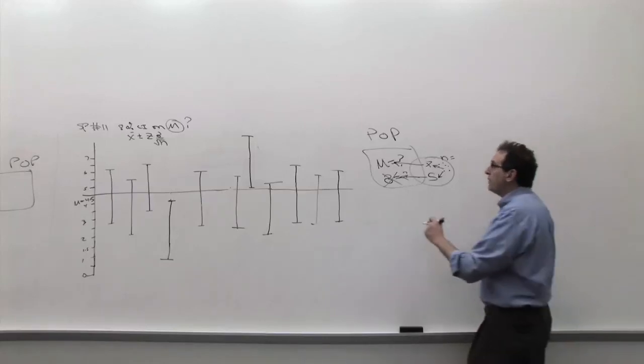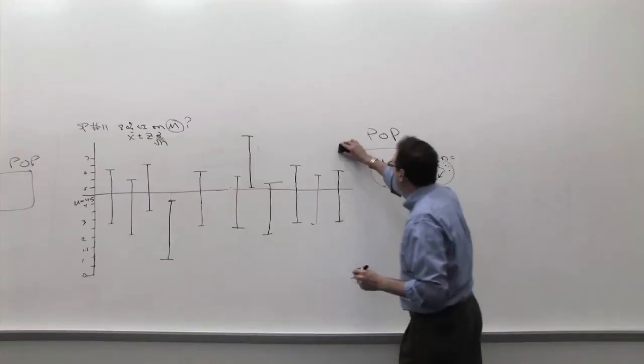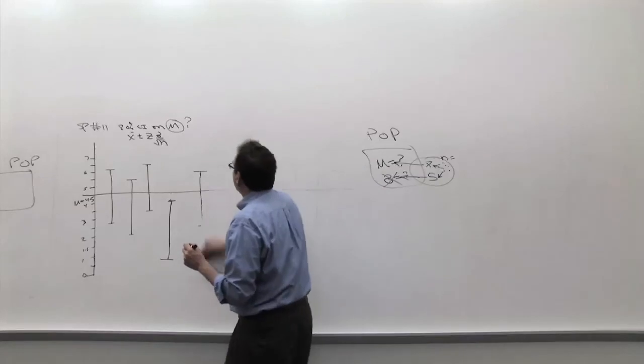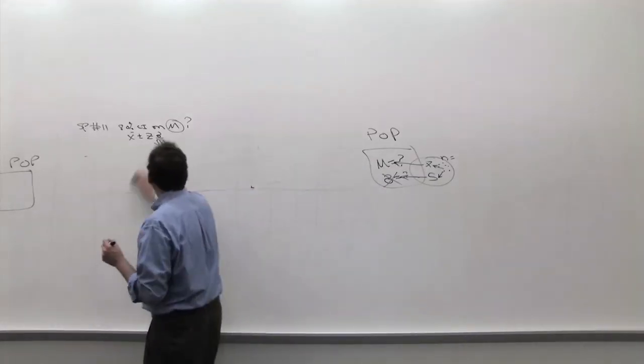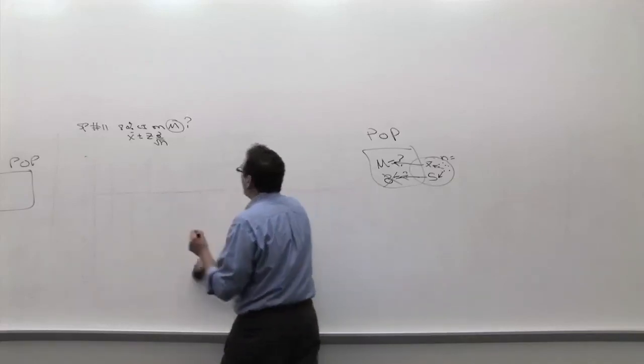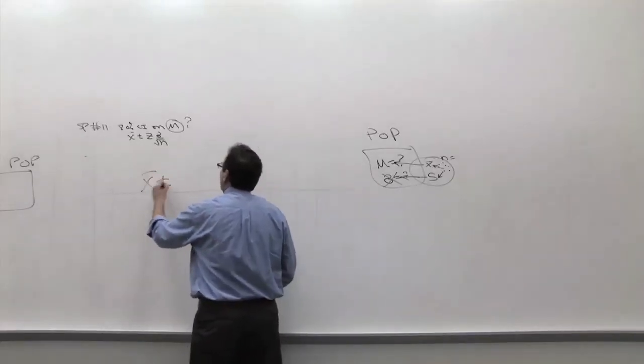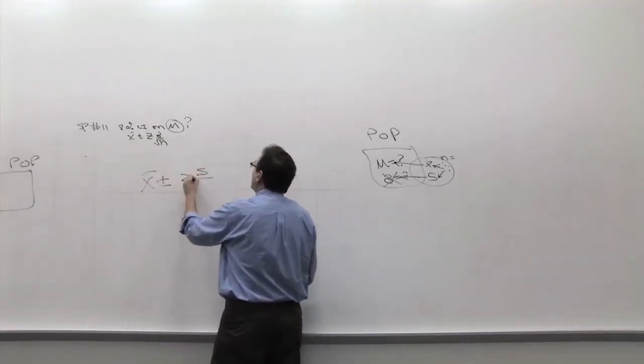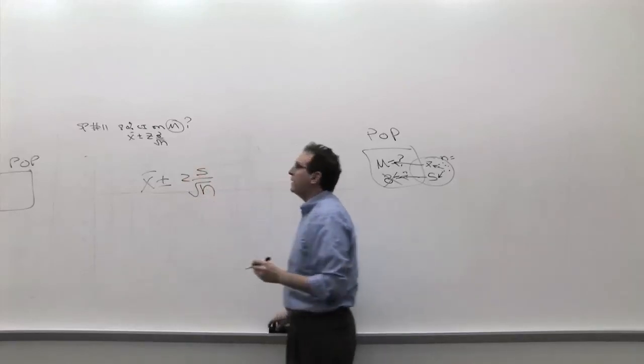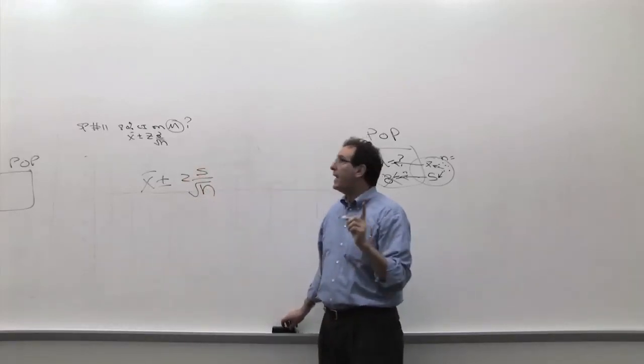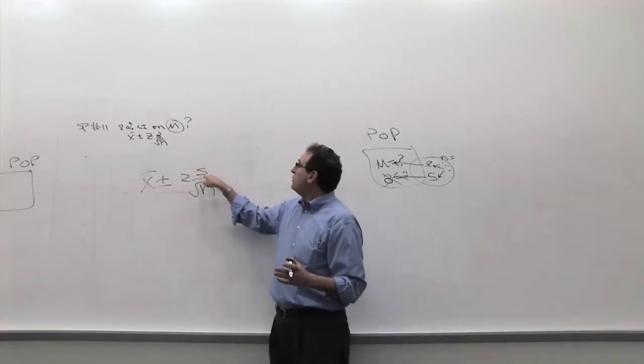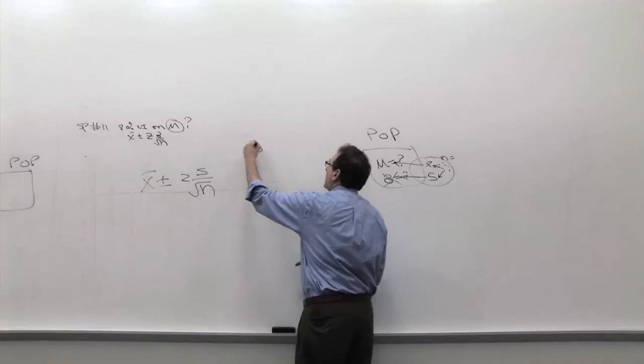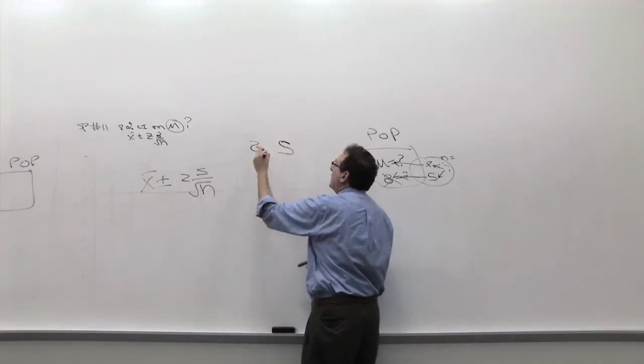So now the formula, the new version of the formula is going to be, instead of x bar plus or minus z times sigma over square root n, the first thing we're going to do is substitute the more practical s over square root n. What we're doing is substituting, instead of the sigma, the standard deviation of the sample. But now, if you think about it further, without going into some mathematical proof, using common sense, which is more accurate, the sigma or the s? The sigma or the standard deviation? Obviously...